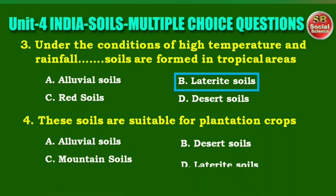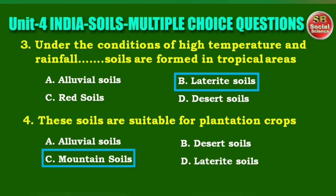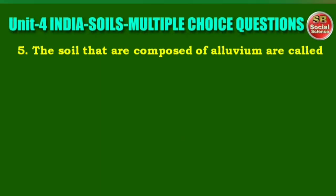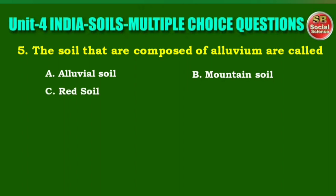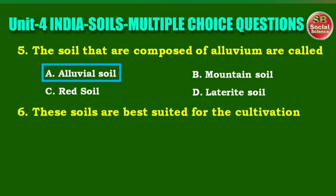Next question: these soils are suitable for plantation crops. Options are: alluvial soils, desert soils, mountain soils, laterite soils. The right answer is option C, mountain soils are suitable for plantation crops. Next question: the soils that are composed of alluvium are called. Options are: alluvial soil, mountain soil, red soil, laterite soil. The right answer is option A, alluvial soil.